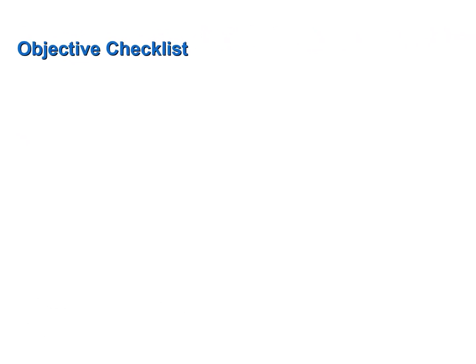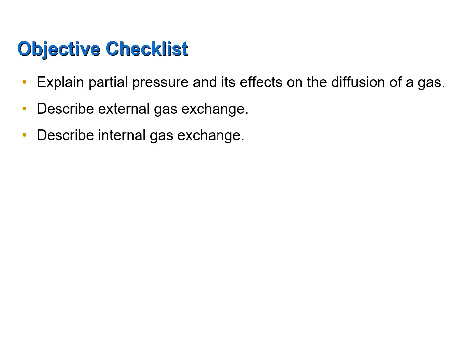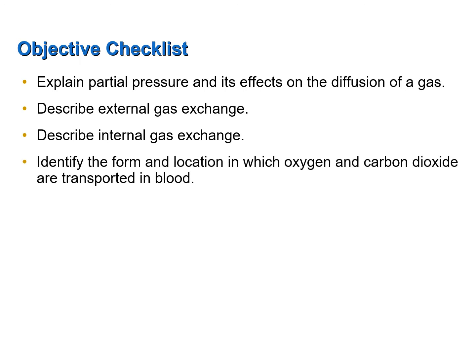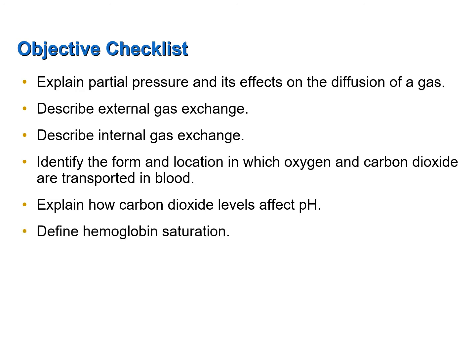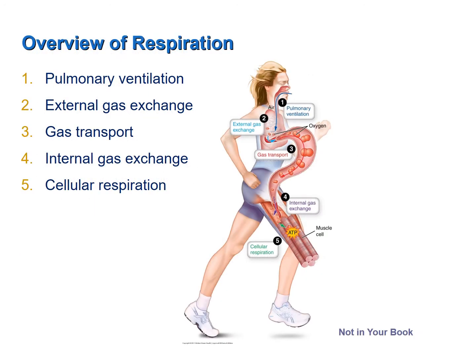This screencast was designed to help you achieve the following objectives: explain partial pressure and its effects on the diffusion of a gas; describe external gas exchange; describe internal gas exchange; identify the form and location in which oxygen and carbon dioxide are transported in the blood; explain how carbon dioxide levels affect pH; and define hemoglobin saturation.